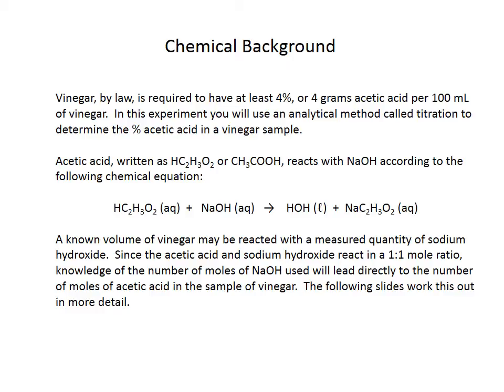In terms of chemical background, vinegar by law is supposed to have somewhere around 4% or so grams of acetic acid per 100 milliliters. The acetate ion is C2H3O2 with a minus on it — this has a proton on it to make it an acid. What we want to do is figure out in some acetic acid and vinegar samples what the percent of acetic acid actually is. It's a typical acid-base reaction with sodium hydroxide producing water and sodium acetate, and the acetic acid and sodium hydroxide react in a one-to-one ratio. So if I know how many moles of one, I also know how many moles of the other, as long as I can tell where those moles are equal to each other.